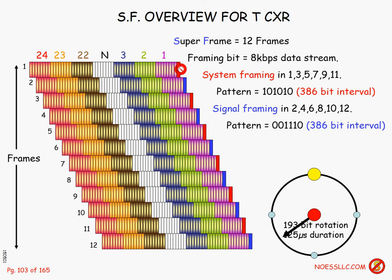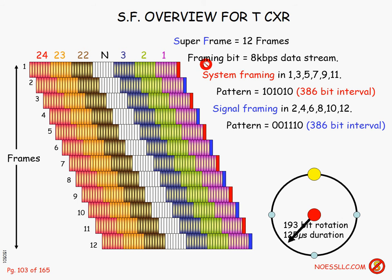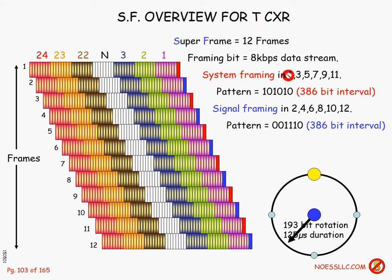What I have here is a grouping of 12 frames known as a SuperFrame. The system has to line up — the T-System uses a single bit for alignment so the receiver can synchronize to the transmitter and know where every bucket in time is. The system framing pattern only occurs in frames number one, three, five, seven, nine, and eleven.